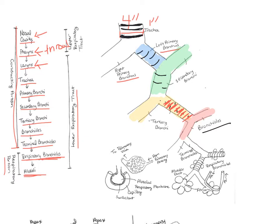When that smooth muscle contracts, it closes down the diameter of the bronchiole — we call that bronchoconstriction. When it relaxes, it opens up the diameter — bronchodilation. The autonomic nervous system controls this. The sympathetic nervous system (fight or flight) relaxes those muscles, causing bronchodilation. When the parasympathetic nervous system is stimulated (rest and digest), it causes the bronchiole to decrease in diameter.